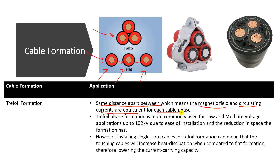This is important for the balance of the three phases — they all suffer from the same conditions. The trefoil formation is commonly used for low voltage and medium voltage up to 132 kV, because it is easy to install and reduces the space required compared to the flat formation, which requires large spaces between cables.